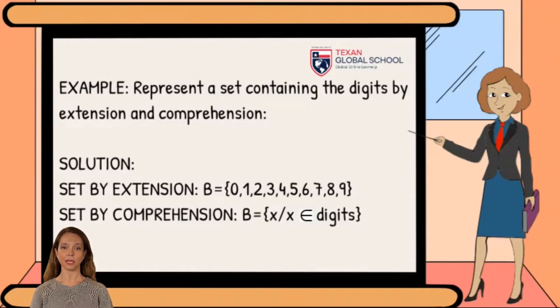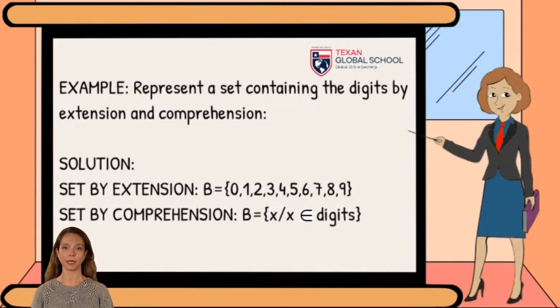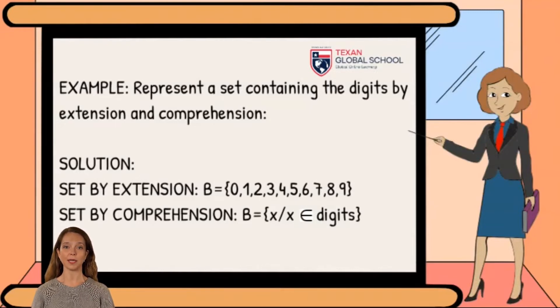For the set by comprehension, we observe that the common characteristic is that they are digits. Therefore, it is concluded that the set B is equal to all the elements of X, such that X belongs to the digits.